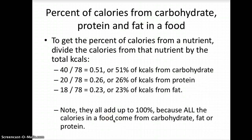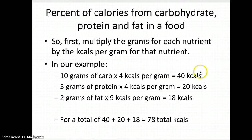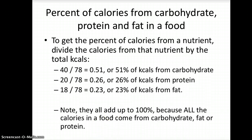The last step is to get the percent of calories from carbohydrate. We were just figuring out the total number of calories from each nutrient, but what this number doesn't show us is what portion of the total calories comes from that nutrient. That's what the next step is — determining the percent of calories from that nutrient. So if 40 out of the 78 total calories come from carbohydrate, that's equal to about 51%. You would do 40 divided by 78. In your calculator you'll see 0.51 — you can multiply times 100, or just say that equals 51%.